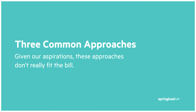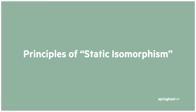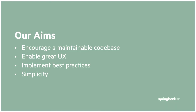When we look over these, as a business, none of them really fit the bill for what we want to achieve for our clients. So we started thinking about the principles of static isomorphism, and how it reuses existing ideas but just puts them together in a new way. Beyond what we talked about, the aims we want to achieve: encourage a maintainable codebase that all of our developers can work on efficiently, enable a great user experience for the developer, the user, and the client. We want to implement best practices, and keep things simple.